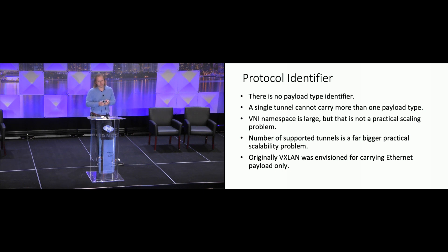Certainly that can work, but it's not the easiest or most flexible way to do that. One possible solution used in practice is to run parallel tunnels, and that certainly works — the namespace for the VNI identifiers is sufficiently large. However, there is another practical problem: the cost of the tunnel itself as an entity on the element is far bigger, and that is a far bigger practical problem than the perceived depletion of VNI identifiers.